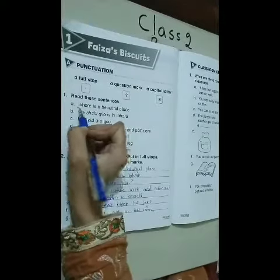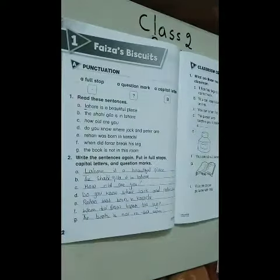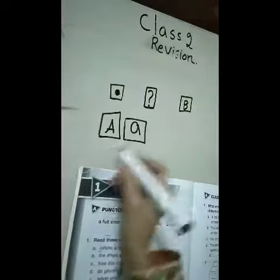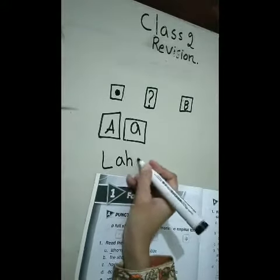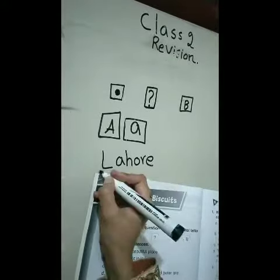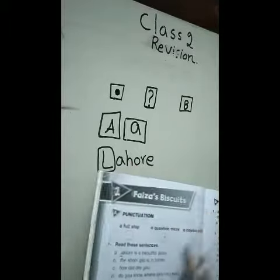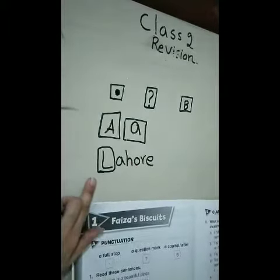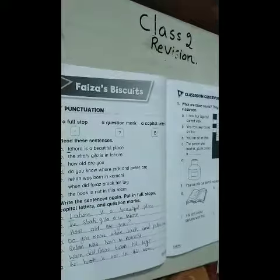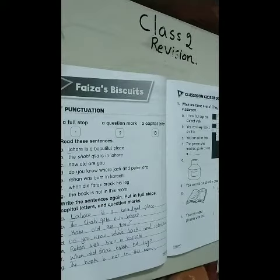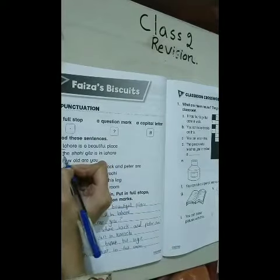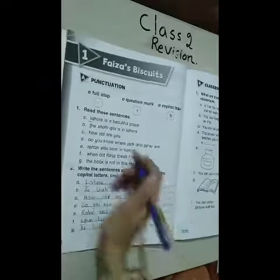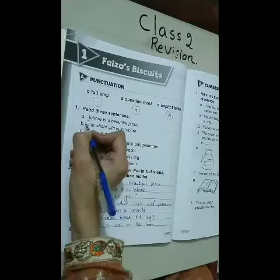یعنی کہ بڑی A, B, C سے چھوٹی A, B, C سے start ٹھیک نہیں ہوگا۔ تو جو Lahore ہے اس کو ہم لکھیں گے — Lahore کا L جو ہے وہ ہم بڑا کریں گے۔ This is the small letter, then what do we have to do for this letter?